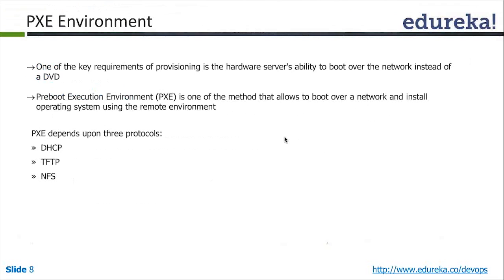Once it boots that small environment, it is now in a position to locate the next server — the actual operating system itself. It pulls down the actual kernel from another server; this time an HTTP server, where your entire CD-ROM image may be mounted. He pulls it down from there and installs it. This is how the whole automation of server booting and complete installation happens.